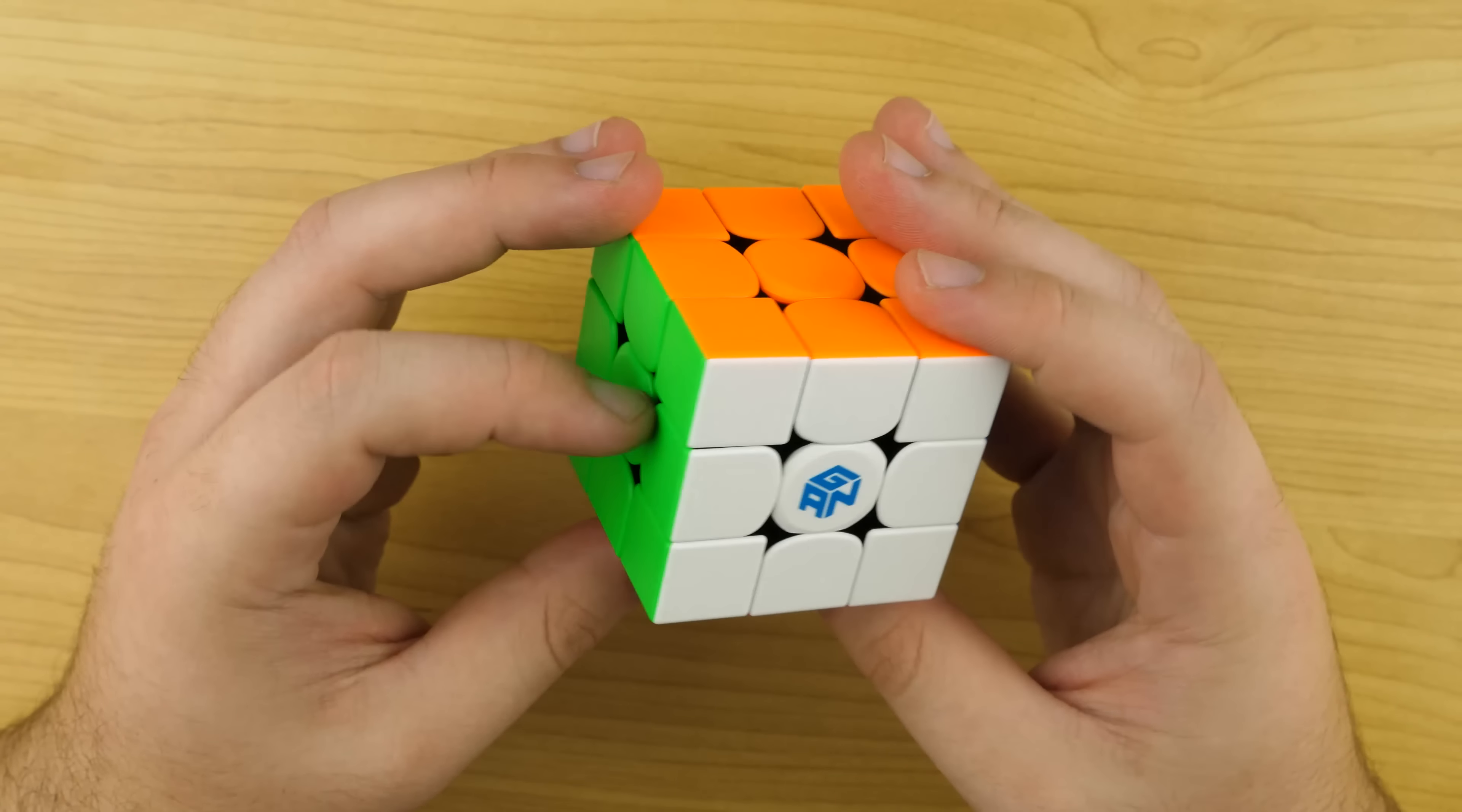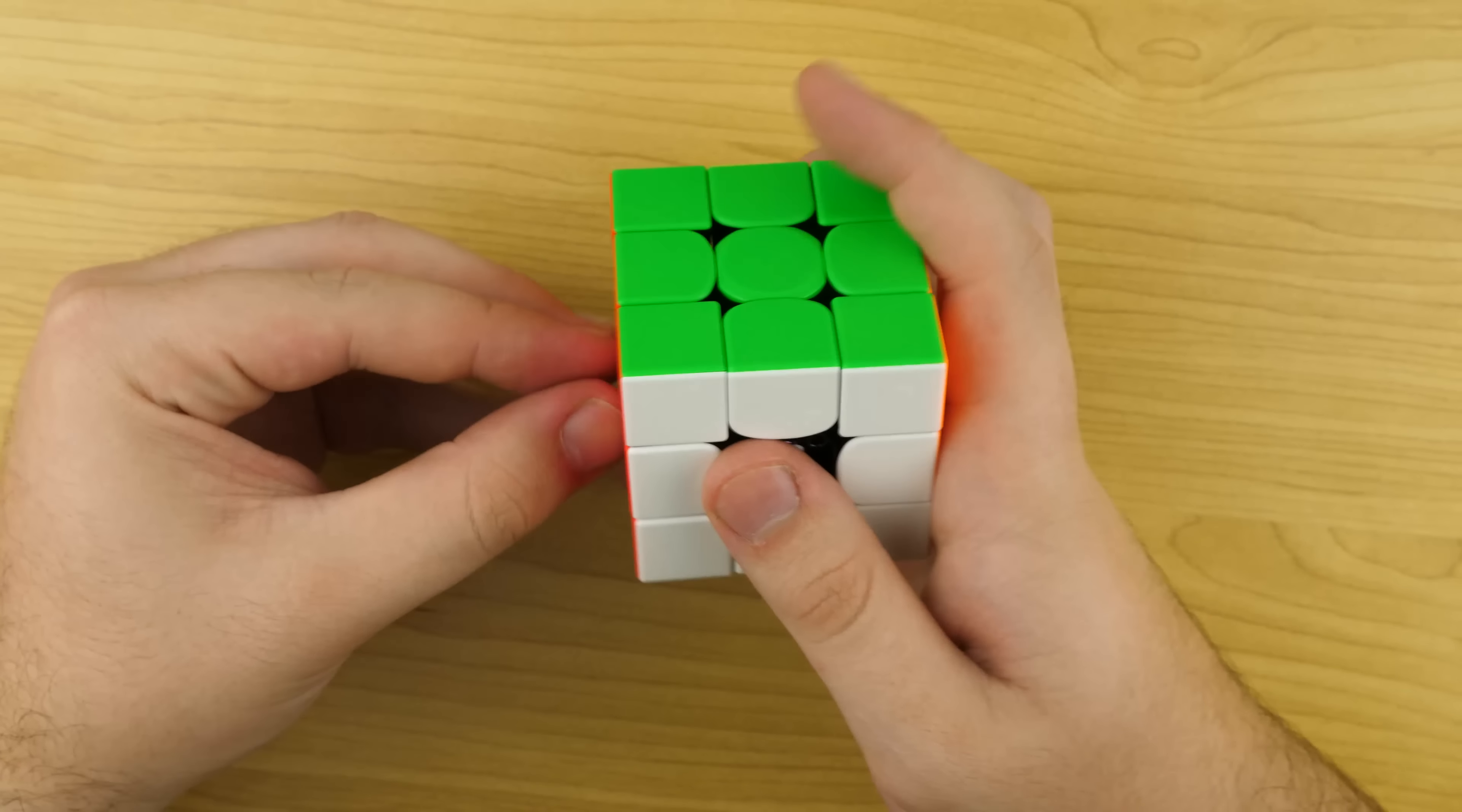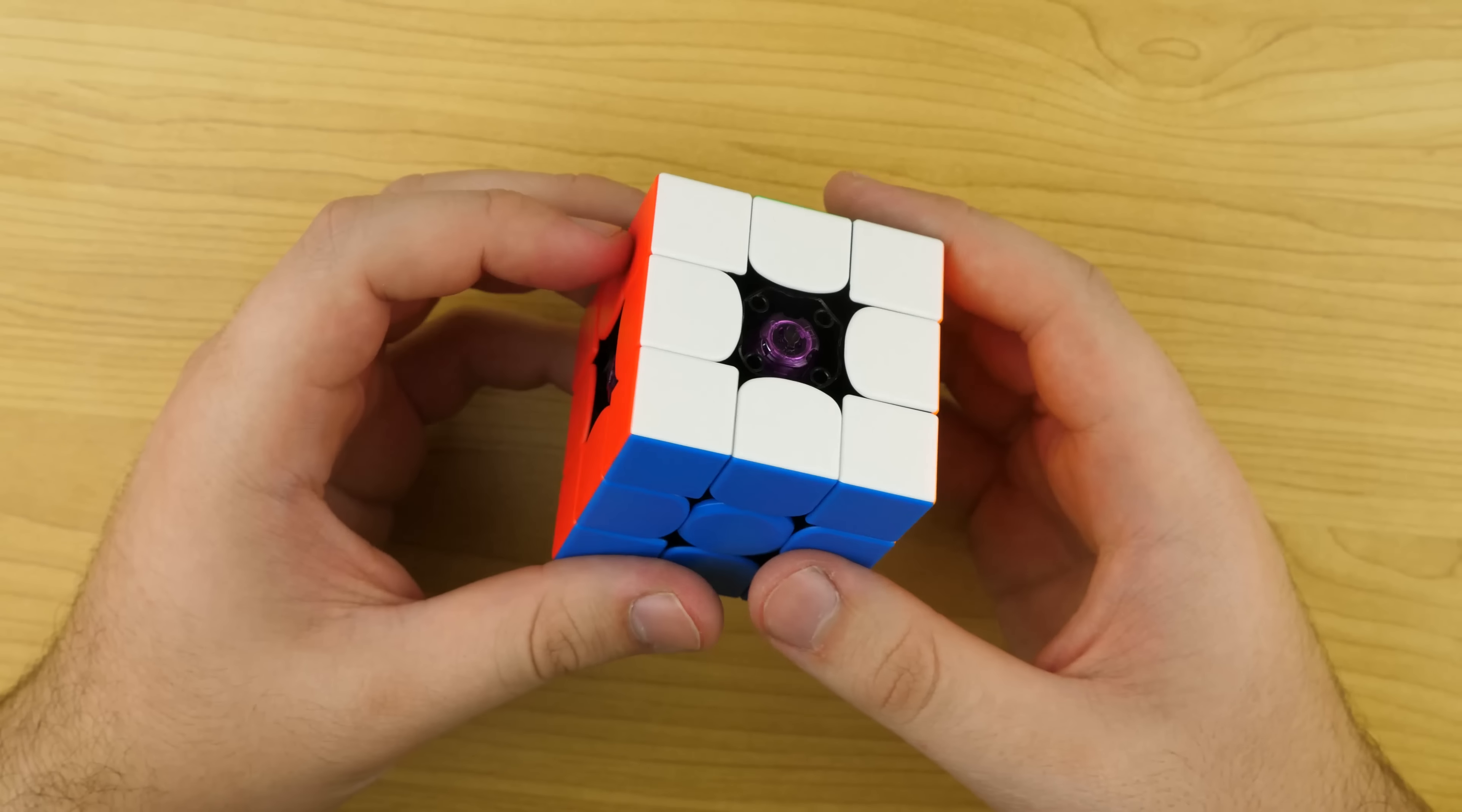Okay, let's see if we can pop off the center caps now and look at the tensioning system. Okay, purple centers. I'm going to zoom in the camera real quick, and then we'll take a closer look at these.